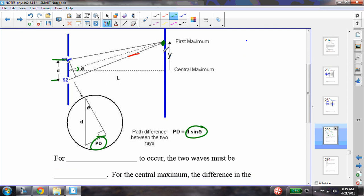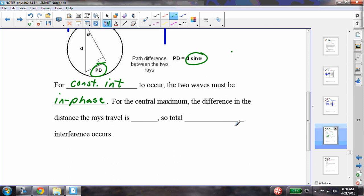All right. Now, for constructive interference to occur, the two waves must be in phase, of course, as we've already seen. For the central maximum, the difference in the distance that the rays travel, in order to have this constructive interference, the distance that the rays travel is zero. So total constructive interference occurs.